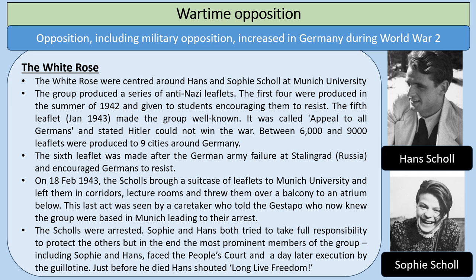The Scholls were arrested. Sophie and Hans both tried to take full responsibility to protect the others, but the most prominent members of the group, including Sophie and Hans, faced the People's Court, and a day later execution by guillotine. Just before he died, Hans shouted 'Long live freedom.' Hans and Sophie Scholl are well-remembered for their very brave and determined resistance against the Nazis, and others were also implicated in the White Rose opposition.